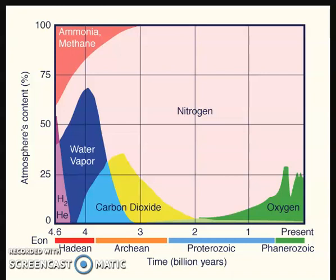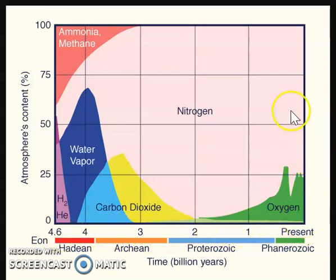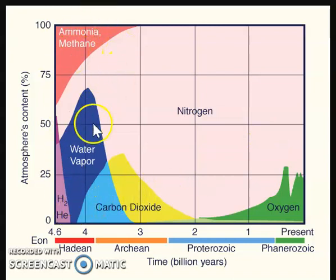It's estimated that the Earth is roughly 4.5 to 4.6 billion years old. You can see on the graph presented here that we have that timeline up to the present, where we mostly have oxygen and nitrogen composing our current atmosphere. So how did we get here? Because as you can see, there have been some changes over time.